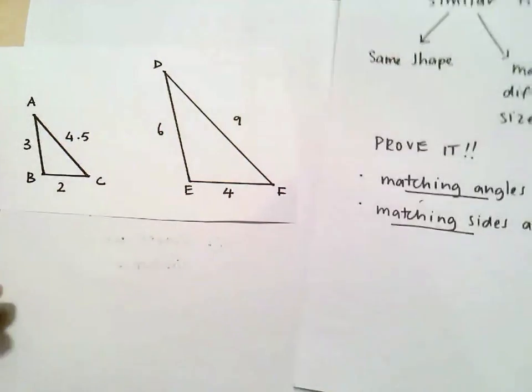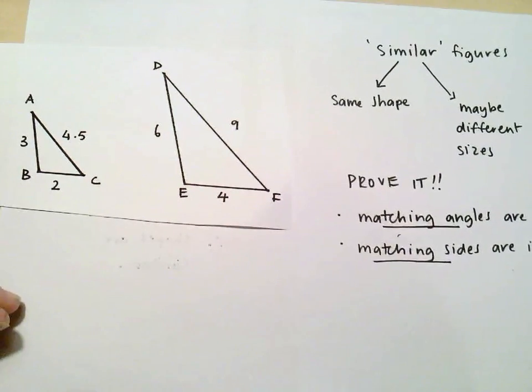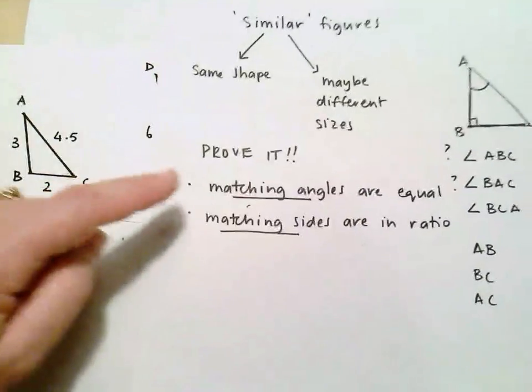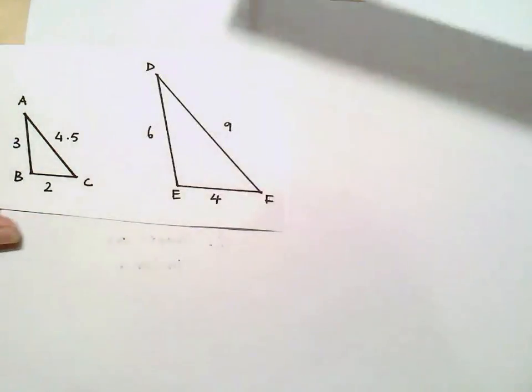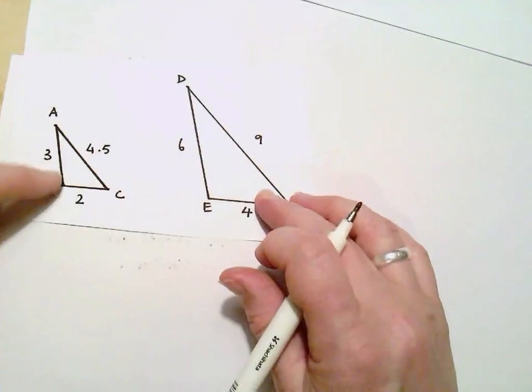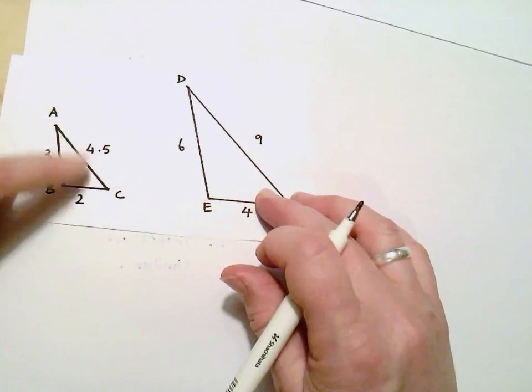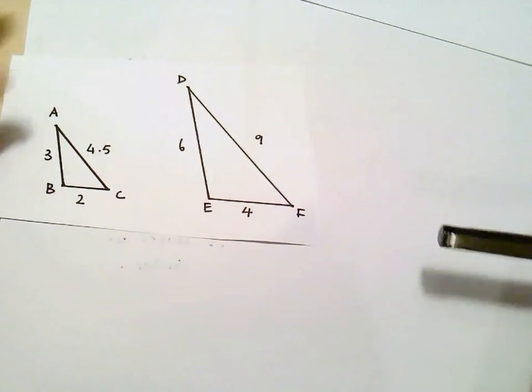we look at the information we're given and we decide are we going to prove that these are similar by looking at matching angles or looking at matching sides. Well, here I'm not given any information about the angles. I'm just given information about the sides. So I'm going to have to use that.